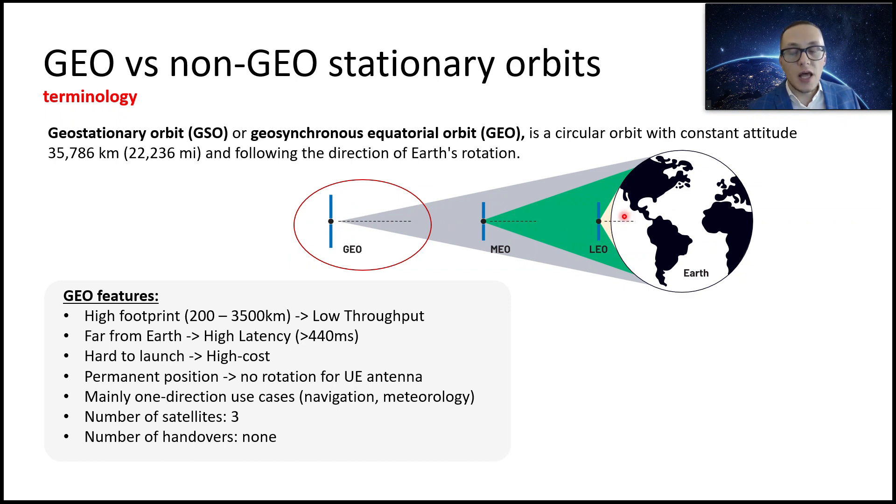Mainly possible for navigation, for meteorology. For example, GPS is a classical example of geostationary orbit service. Number of satellites for global coverage just three is basically enough. And there is no need in handovers because one satellite can offer large footprint.